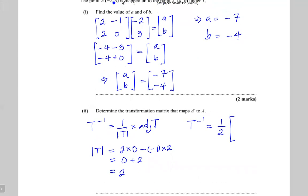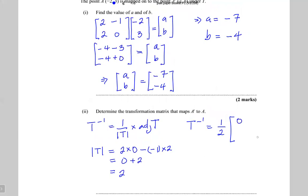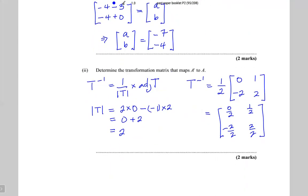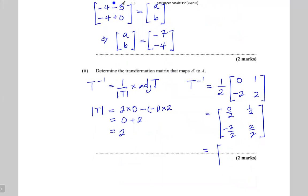For the adjoint of T, switch the leading diagonal elements: zero goes where two was and two goes where zero was; the other elements stay but change sign, giving positive one and minus two. So T inverse is one half times the matrix zero, one, minus two, two. Multiplying by a half gives the matrix: zero, one half, minus one, one.